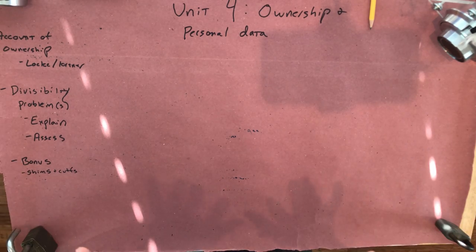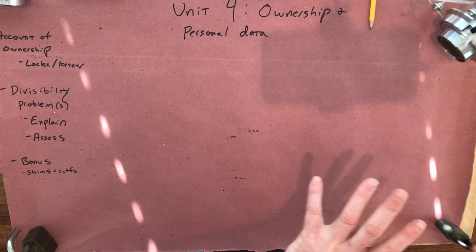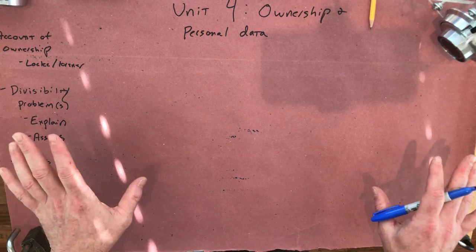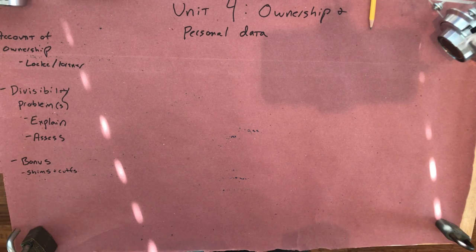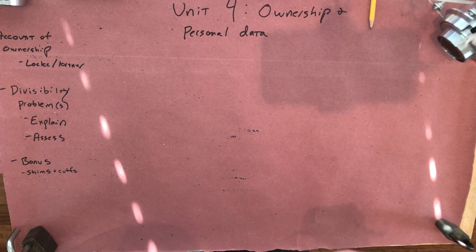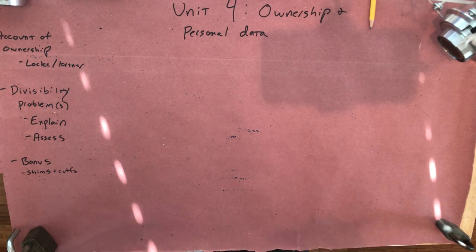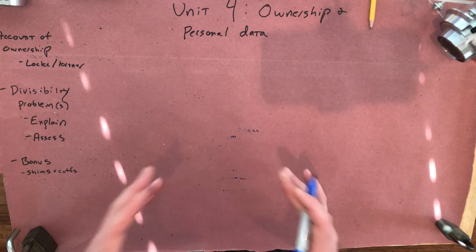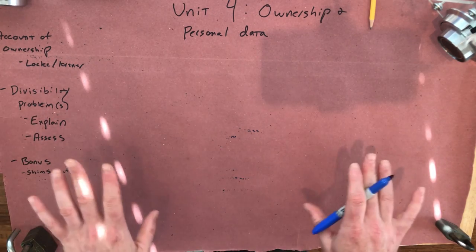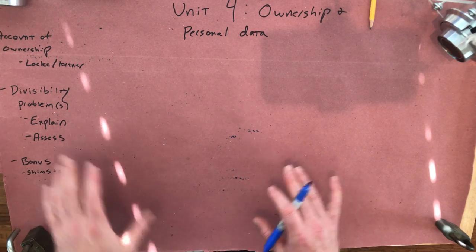We need to explain why owning something should give you a right to use it, which hopefully sounds trivial, although we'll see in a second you need to talk a little bit more about that than you might think. And once we've done that, then I want you to do the usual thing, which is raise a problem for it. And I want you to raise a particular problem, which comes from Sachs' article.